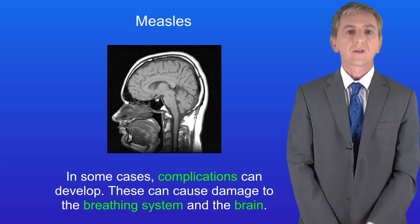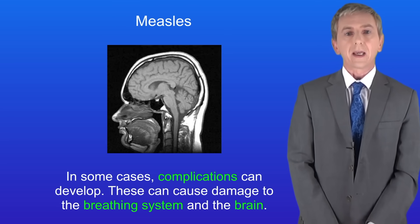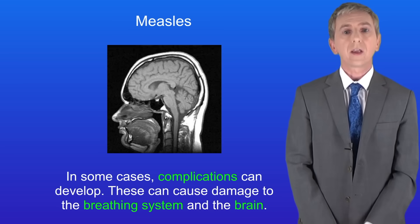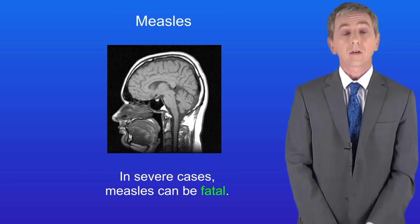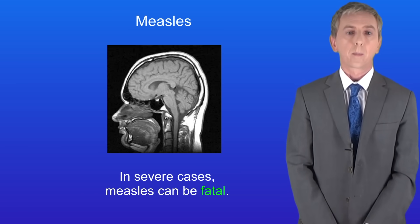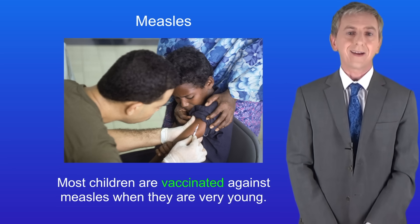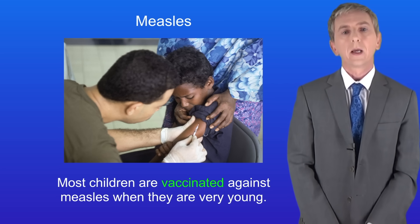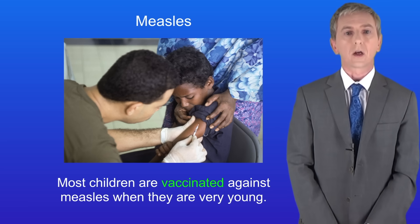Measles is a serious disease. In some cases complications can develop and these can cause damage to the breathing system and the brain, and in severe cases measles can be fatal. Because of this most children are vaccinated against measles when they're very young, and we're going to be looking at how vaccination works in a later video.